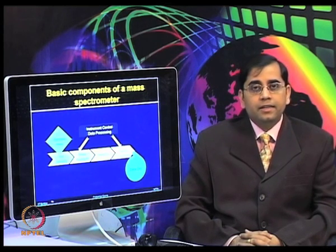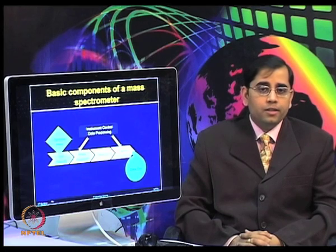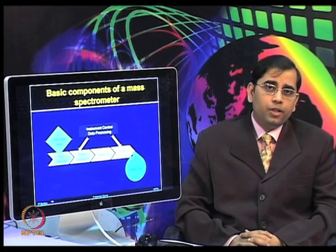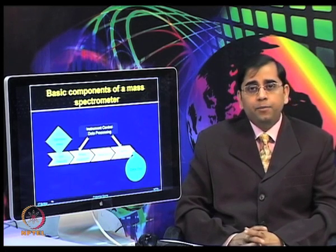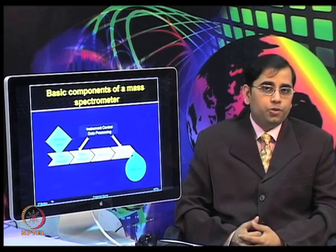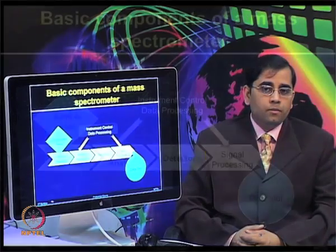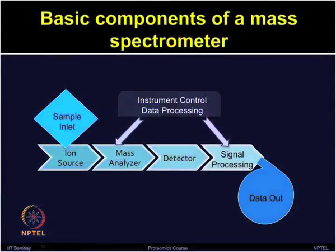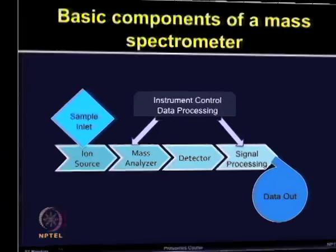The data system records, processes, stores, and helps display the data output. So, although there are three major components — ionization source, mass analyzer, and detector — there are also accessory components that are equally important for performing mass spectrometry-based experiments.